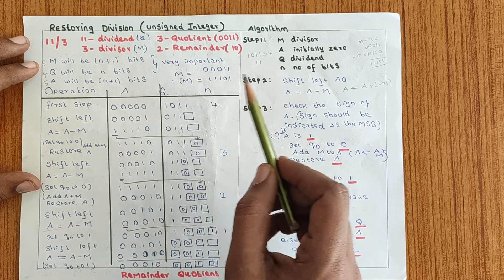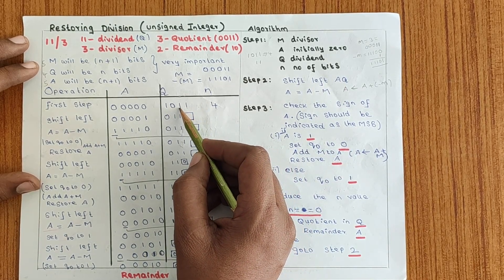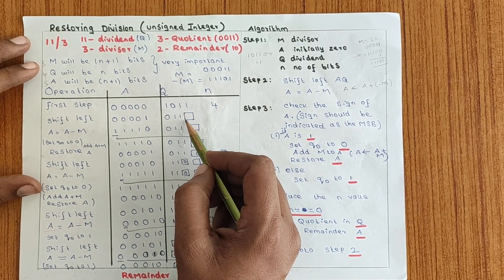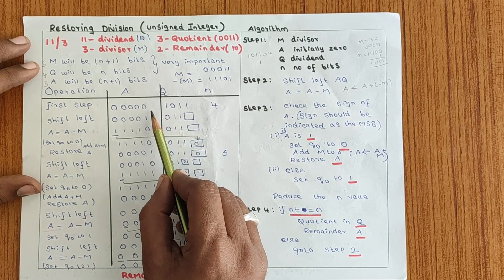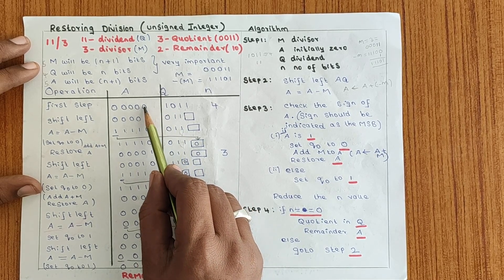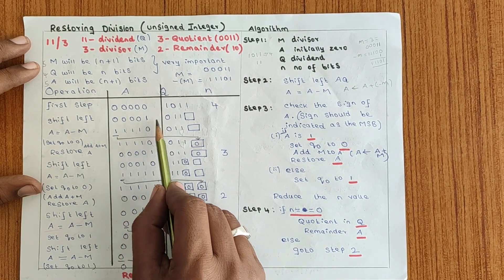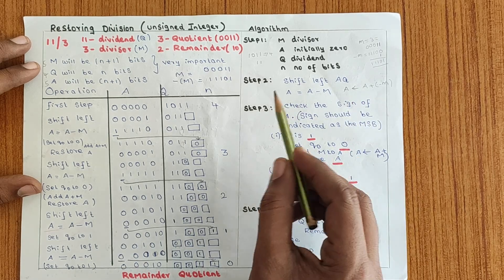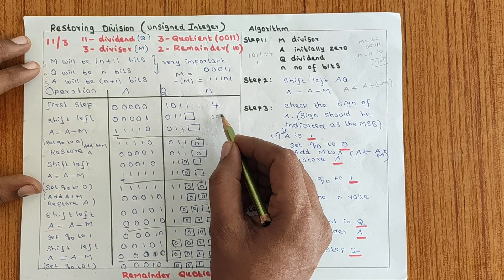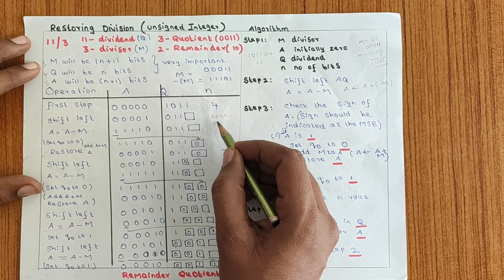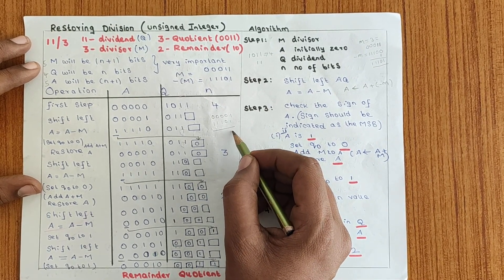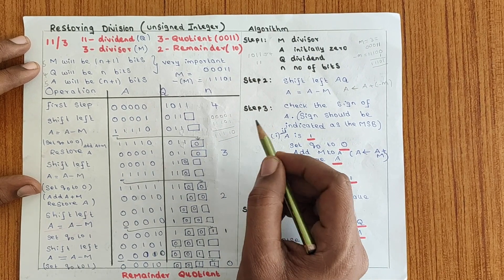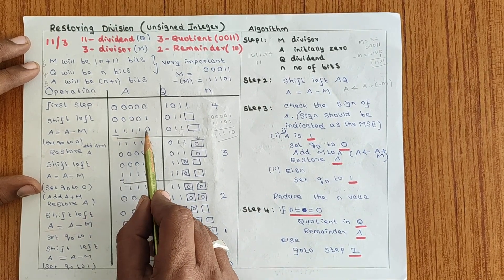Now we start. Shift left AQ: the bits shift left, giving A = 000001 and Q = 011 with one empty space. Then perform A ← A + (−M). A is 000001 and −M is 111101. Adding these gives 111110, which is stored in A.